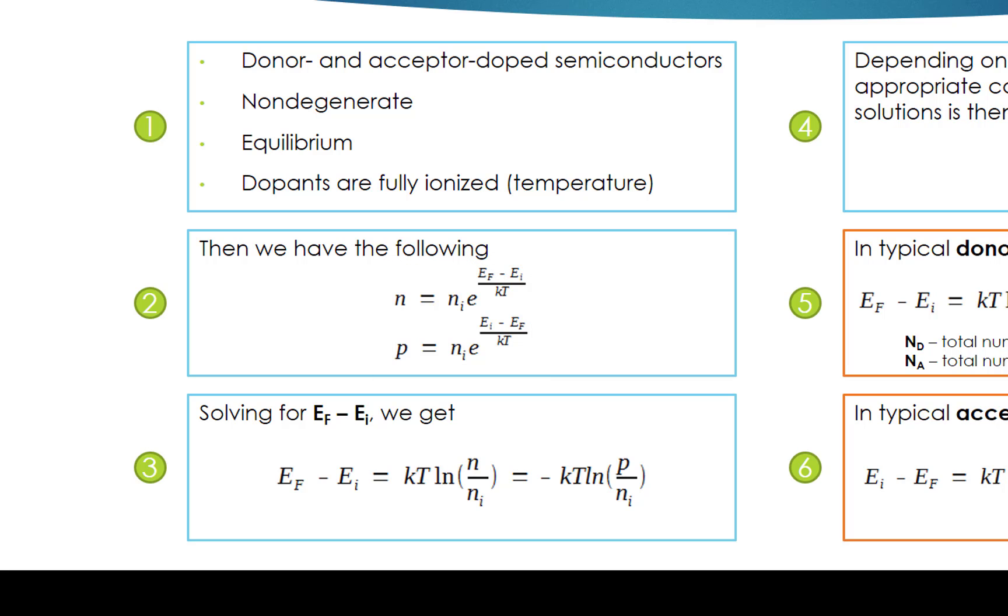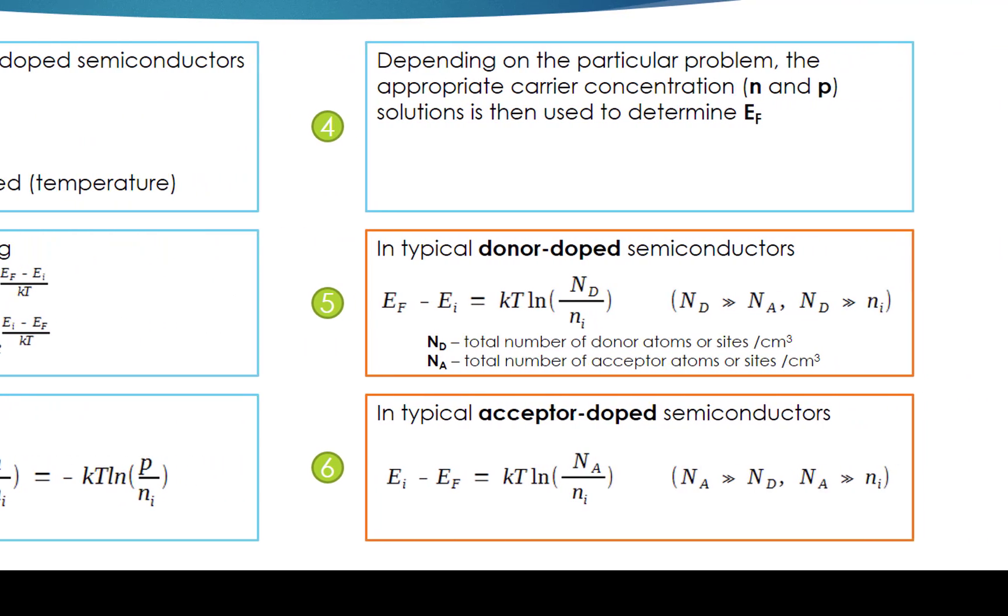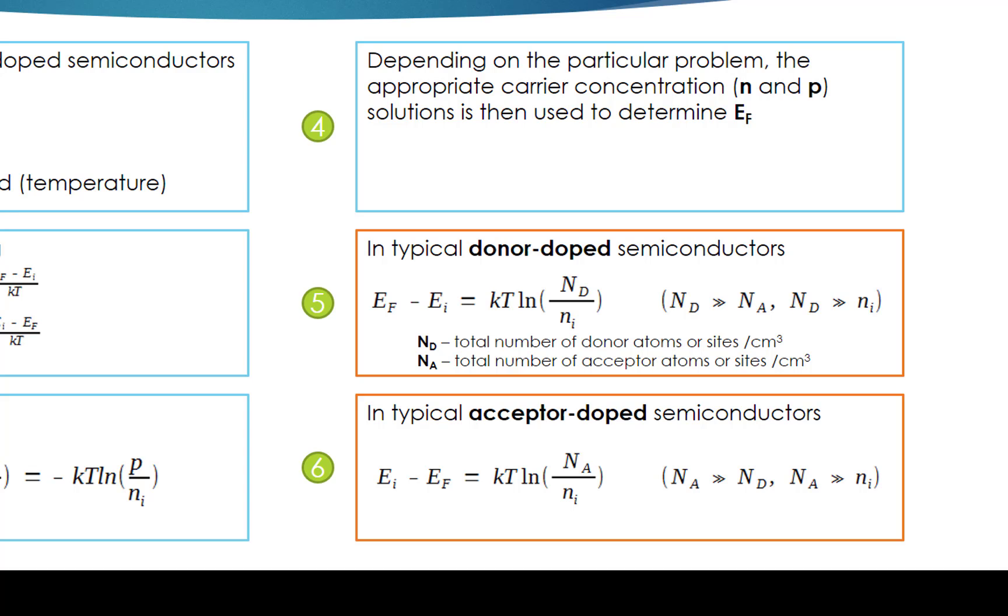We can then solve EF minus EI in terms of N, P, and Ni. Depending on the particular problem, the appropriate carrier concentration formulas for N and P is then used to determine EF.